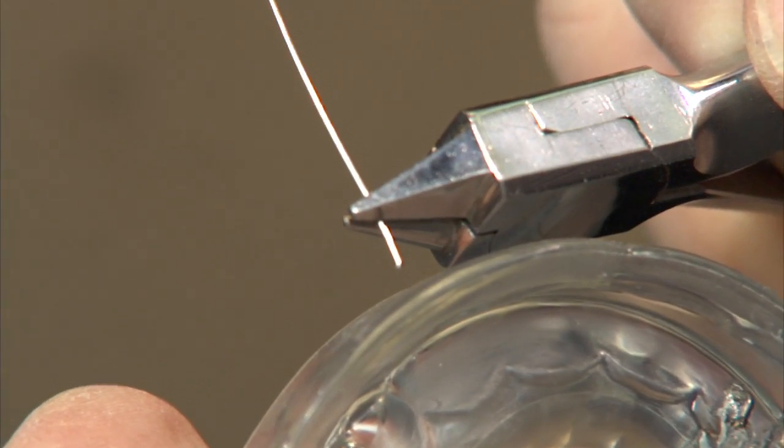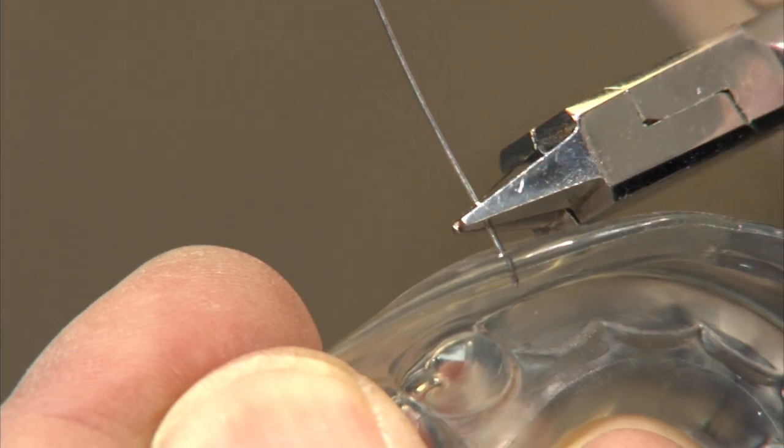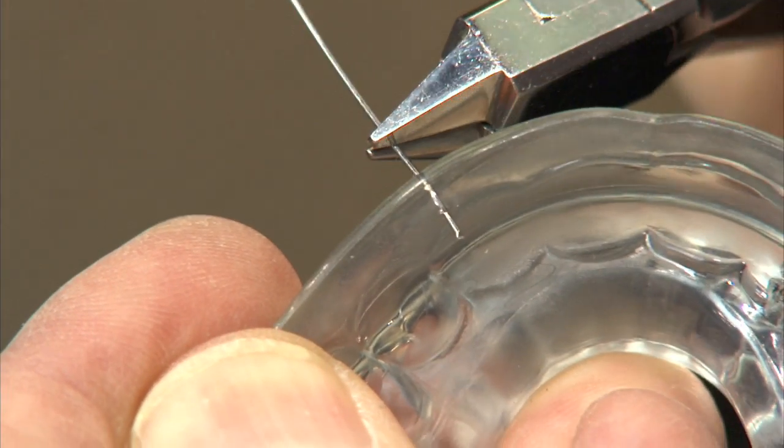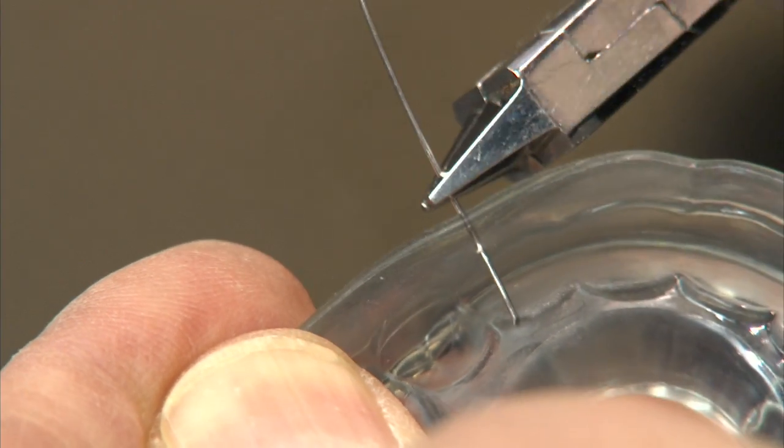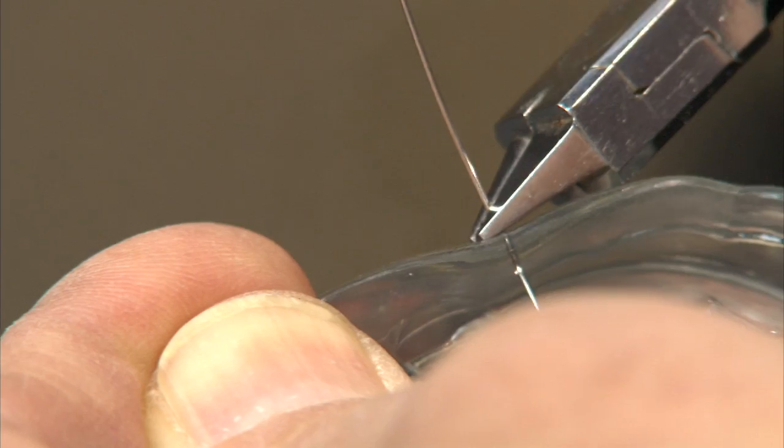We insert this wire into the appliance where we want it to go through. We push it into the lingual, leaving about a millimeter of material above that wire.